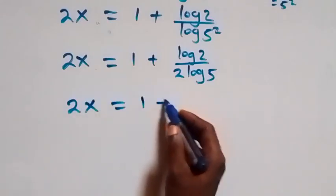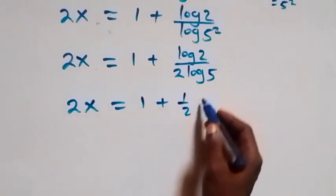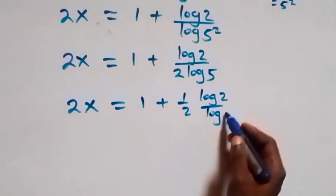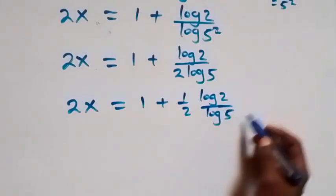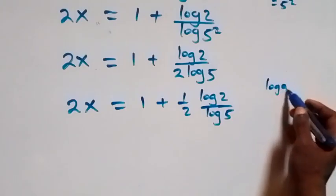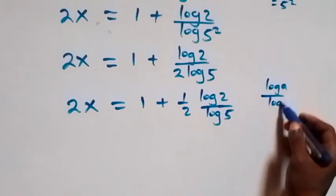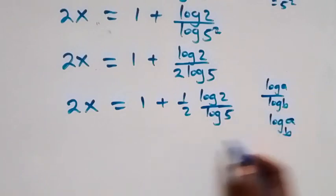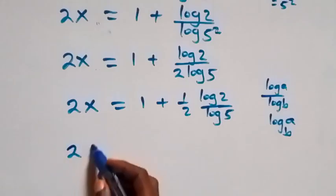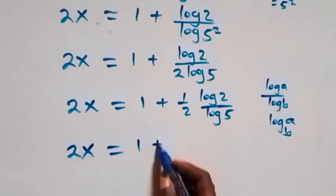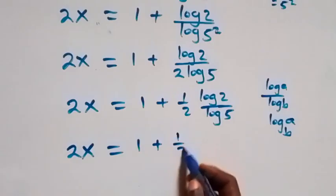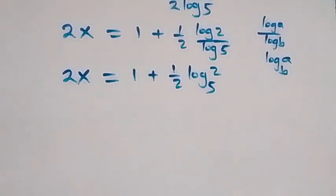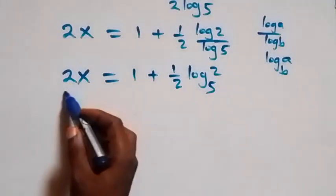This is also the same as 2x equals to 1 plus half times log 2 over log 5. We can use the change of base formula here: log a over log b is the same as log a to base b. So from here we have 2x equals to 1 plus half times log 2 base 5.